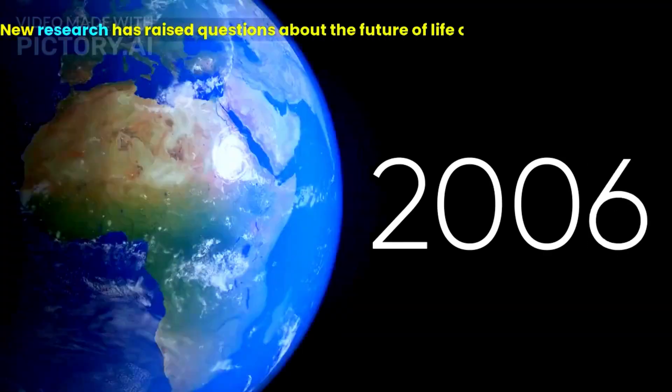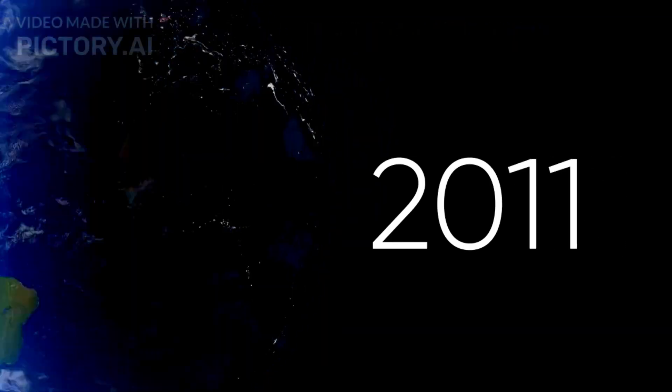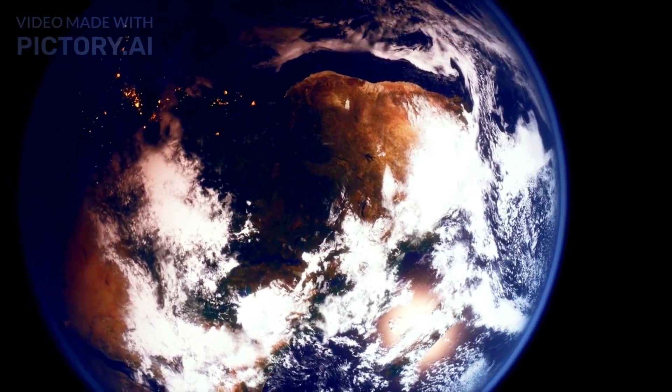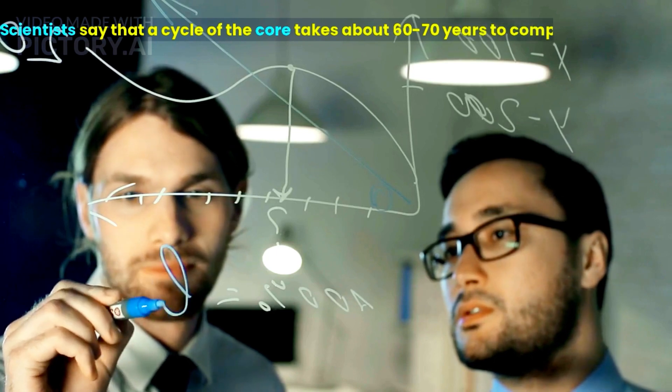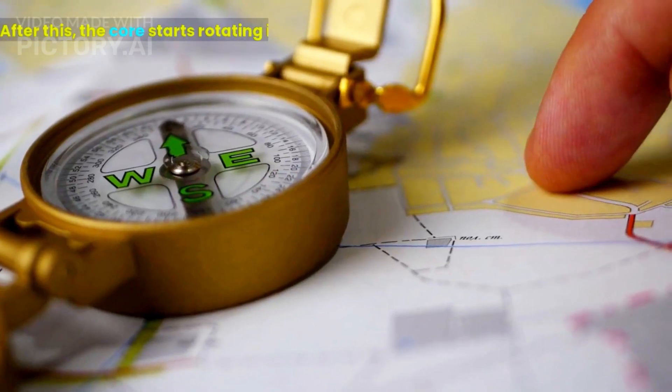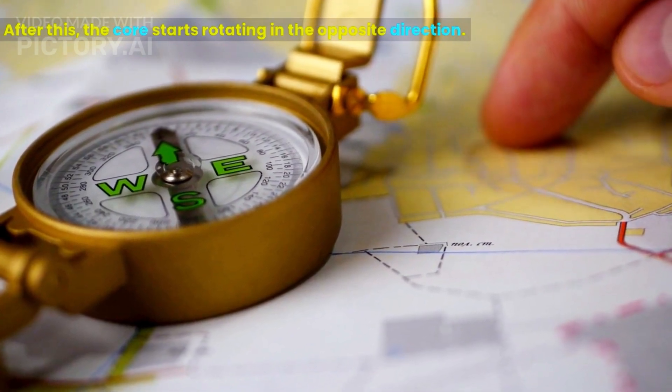New research has raised questions about the future of life on earth. The rotation of the earth's core affects the surface atmosphere. Scientists say that a cycle of the core takes about 60 to 70 years to complete. After this, the core starts rotating in the opposite direction.